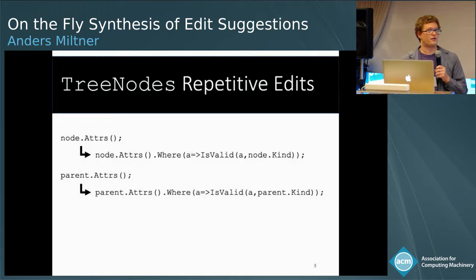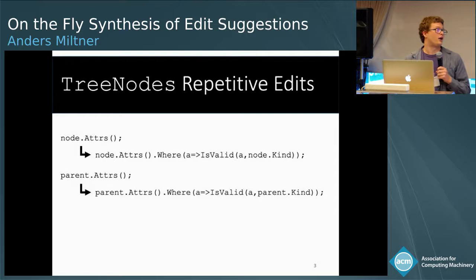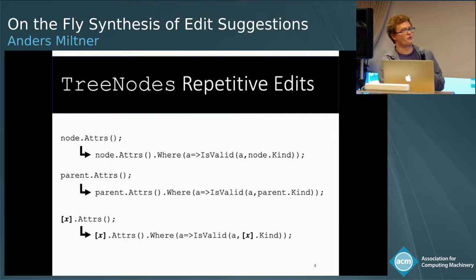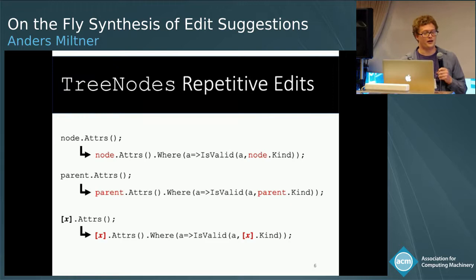Here's an example of a repetitive edit. I've got tree nodes, and those nodes have attributes — it could be like line and column information — and I realized that these nodes don't necessarily have valid attributes. So every time I call node.attributes, I want to filter them by adding in a 'where is_valid' clause, and I do that across multiple places in the file. This is a general transformation: x.attrs goes to x.attrs.where, where x binds to the call site and is set to parent or node.